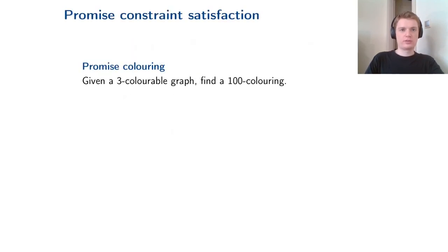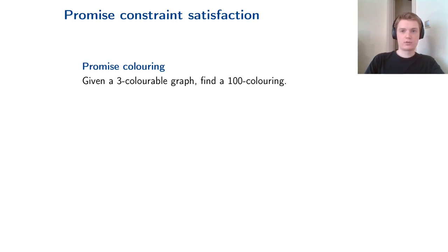This talk is about promise problems and constraint satisfaction. The best example is promise coloring: given a three-colorable graph, can you at least find a 100-coloring? You're promised the input graph is three-colorable but don't know a coloring of it. The question is whether you can find something as weak as a 100-coloring in polynomial time. This question is open.